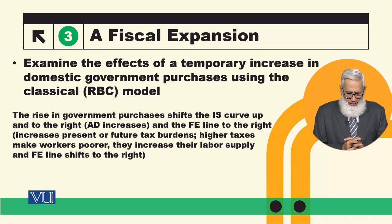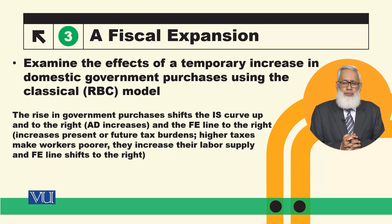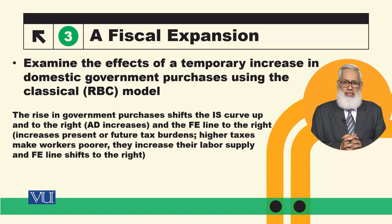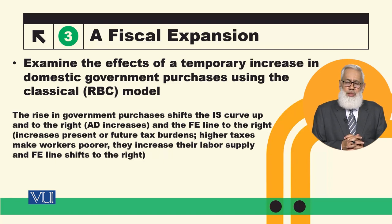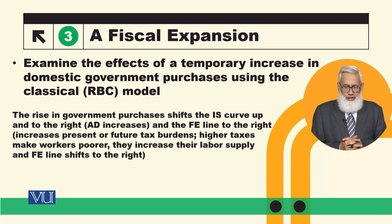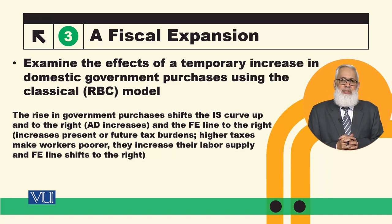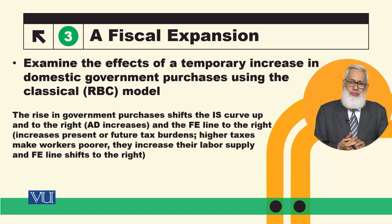The FE line will also shift to the right. In the RBC model, when the government increases its spending, it must be financed — either taxes are raised now or they will be raised in the future. Consumers anticipate higher future taxes, feel poorer, and this feeds into the labor market.